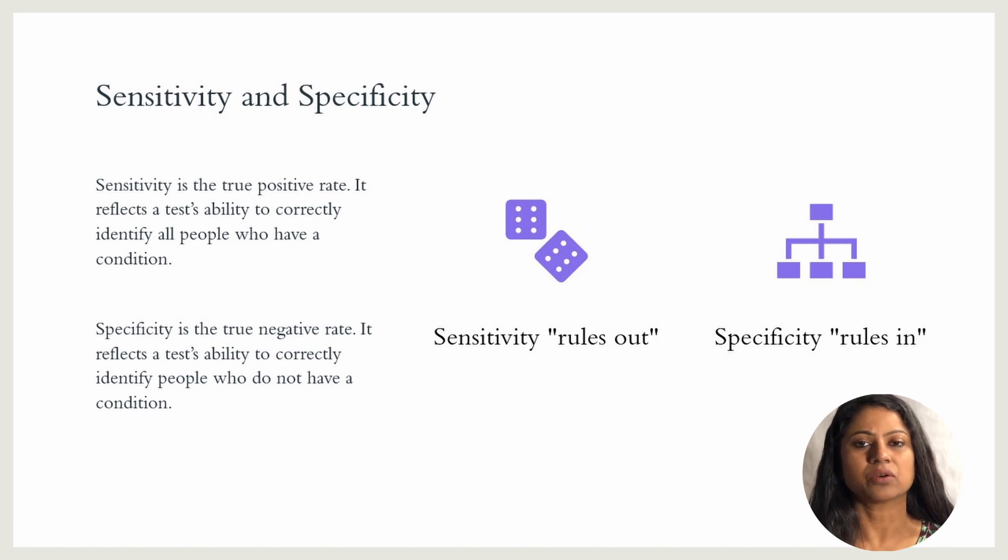Sensitivity rules out, while specificity rules in a disease. An ROC curve can be used to determine a cut-off value for sensitivity and specificity of a diagnostic or screening test.